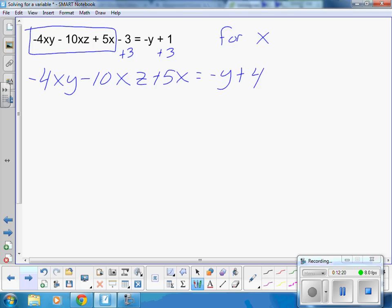So I'm left with negative 4XY minus 10XZ plus 5X equals negative Y plus 4. If you remember on this problem before, we factored out the X. We're going to factor out the X because I have an X here, I have an X here, I have an X here, in all three of those terms. When I factor them out, it's going to be like the X's disappear. I have the X out front times a negative 4Y minus 10Z plus 5 equals a negative Y plus 4.